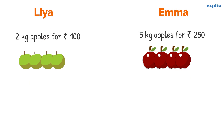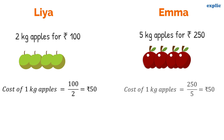The cost of 1kg of apples purchased by Leah is the total cost divided by 2, hence it is 50 rupees. Similarly, the cost of 1kg of apples purchased by Emma is the total cost divided by 5, which is also 50 rupees.